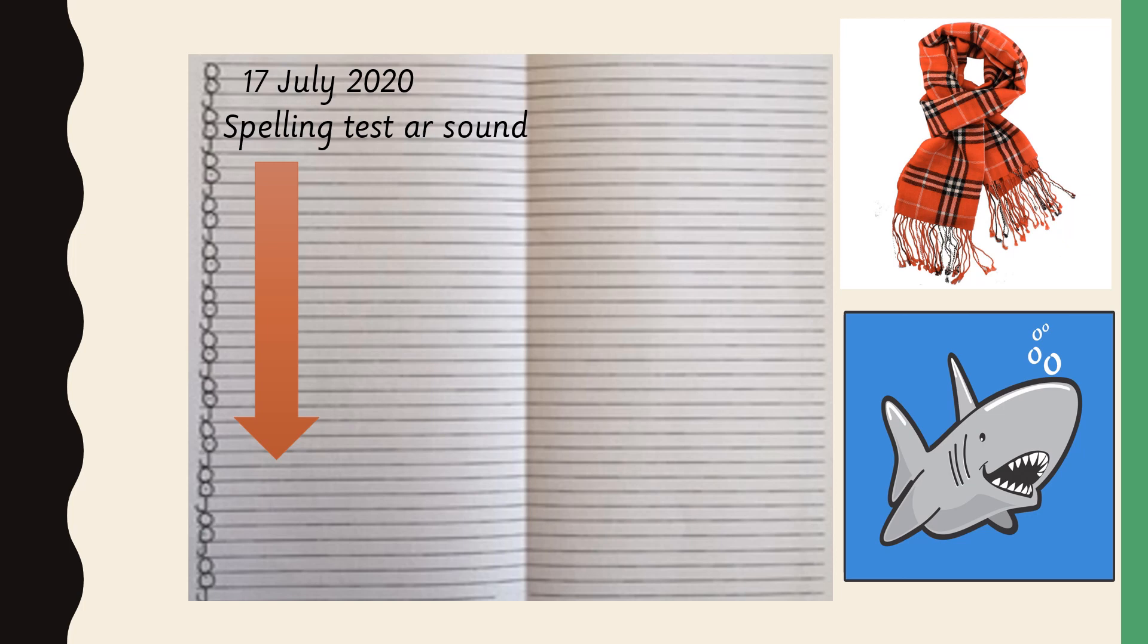Large. Chart. Parked. Sharp. Barn. Dark. Shark. Scarf. Farmyard. Smart. Are. And start.